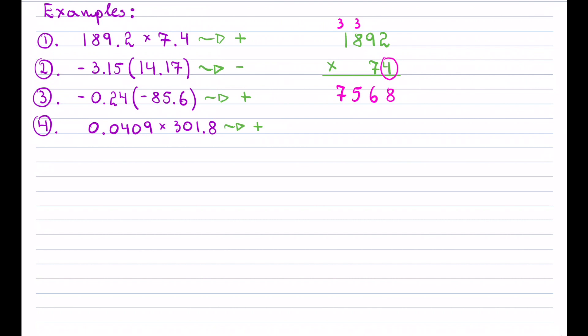When you have multiple digits to multiply by, it's nice to use different colors so you can clearly see what belongs to what. So 7 times 2 is 14 — notice that I start the multiplication below the 7 in the tens place value, so I shift one over. I carry the 1.